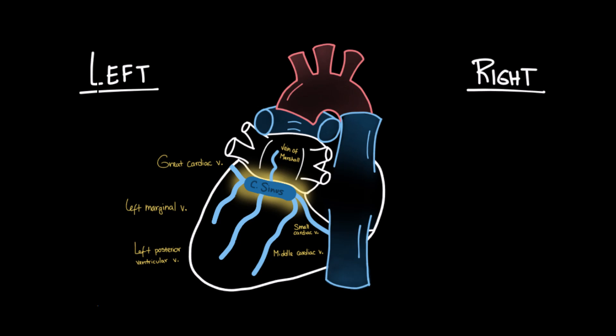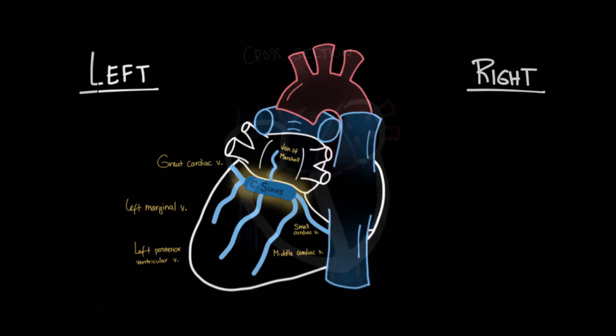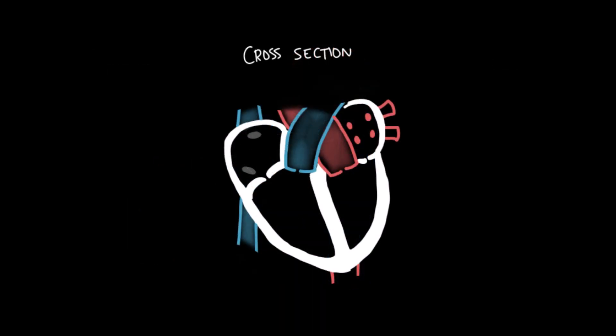After the coronary sinus receives the blood from all of these veins, it then empties directly into the right atrium. If we take a cross-section from the heart, on the right atrium, we can see the opening of the coronary sinus. So most of the venous circulation of the heart drains into the right atrium.